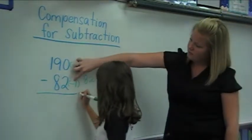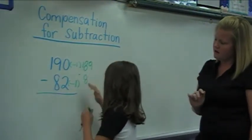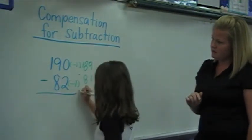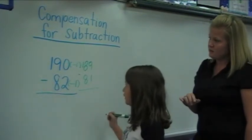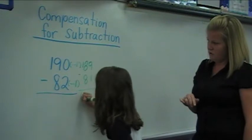Eighty-two minus one. There you go. One hundred minus zero is one hundred.